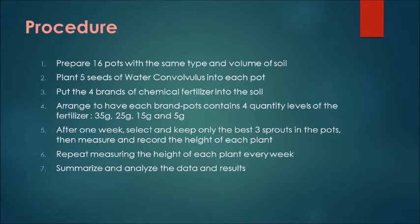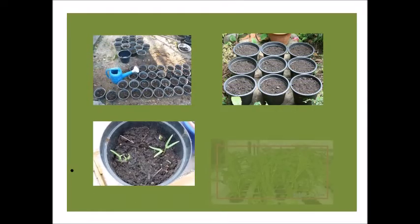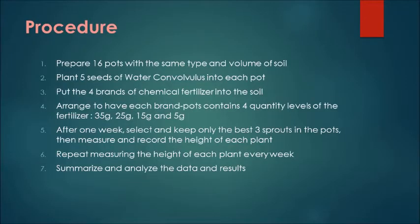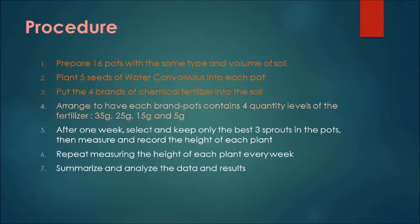Procedure — Step 1: Prepare 16 pots with the same type and volume of soil. Step 2: Plant five seeds of water convolvulus into each pot. Step 3: Put the 4 brands of chemical fertilizer into the soil. Step 4: Arrange to have each brand's pot contain 4 quantity levels of fertilizer — 35 grams, 25 grams, 15 grams, and 5 grams.